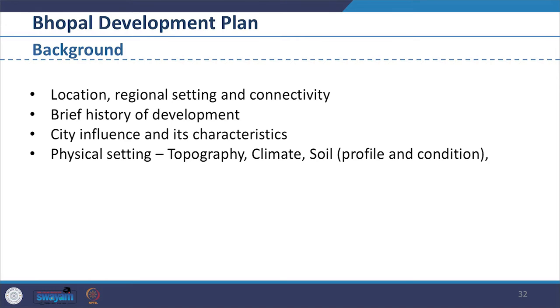Most documents should indicate, as suggested by the guidelines, the background section covering local and regional setting and connectivity, brief history of development of the planning area, city influence and its characteristics including settlement pattern, rural-urban relationship and fringe area development. Physical settings including topography, climate, soil profiles and conditions also need to be provided in the background information of the Development Plan.